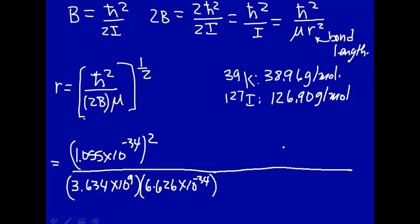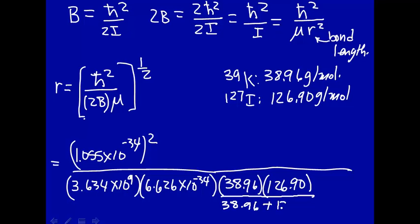Now we've got to multiply by the reduced mass. We multiply the masses, 38.96 times 126.90, divided by the sum of the masses. This is in gram per mole, but we're doing everything in SI units. So we multiply by 10 to the minus 3 to convert to kilogram. And this is per mole, but this is the bond length on a molecular level, so we have to divide by Avogadro's number to convert this on a per atom basis. And this whole thing is taken the square root.